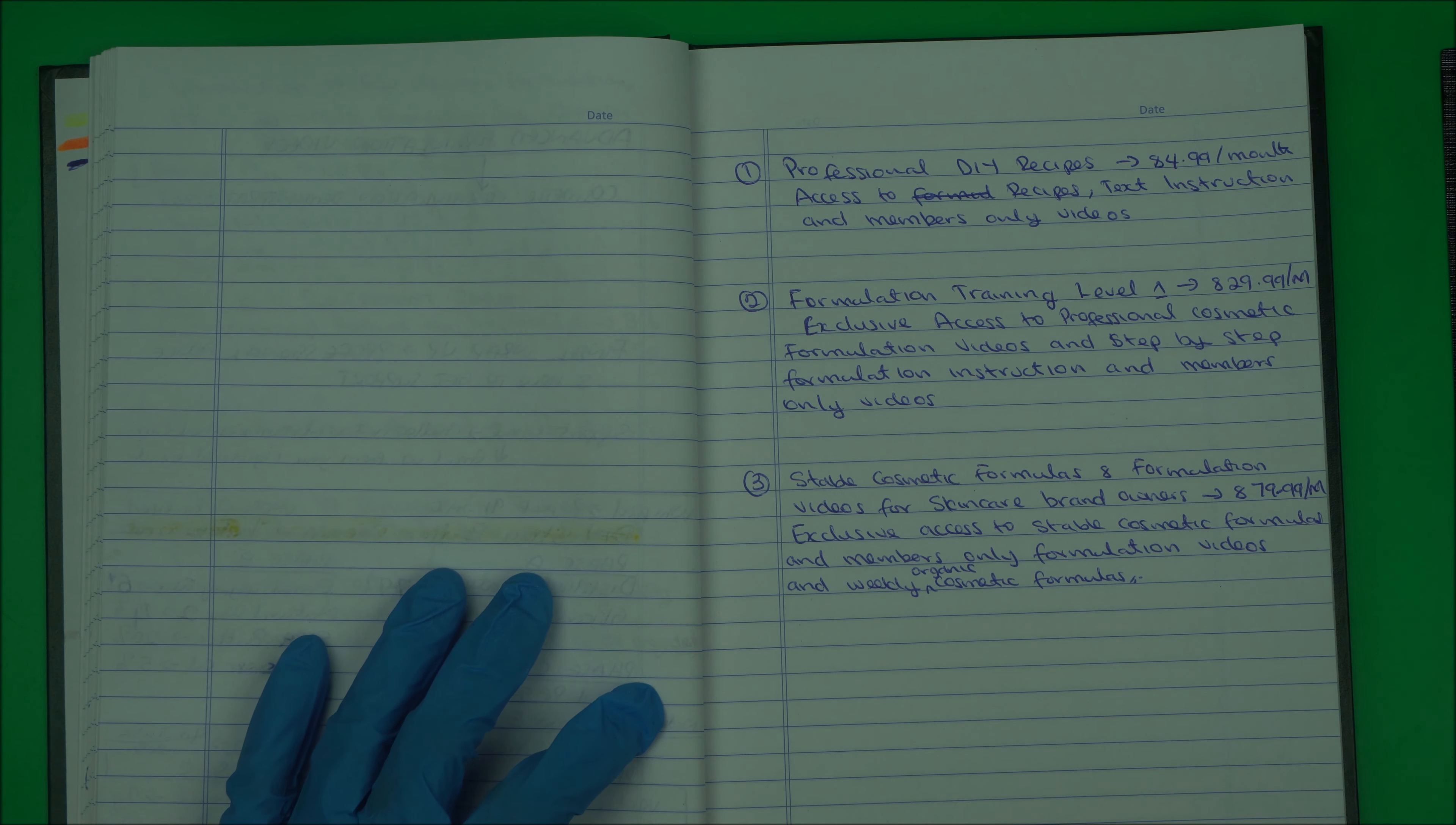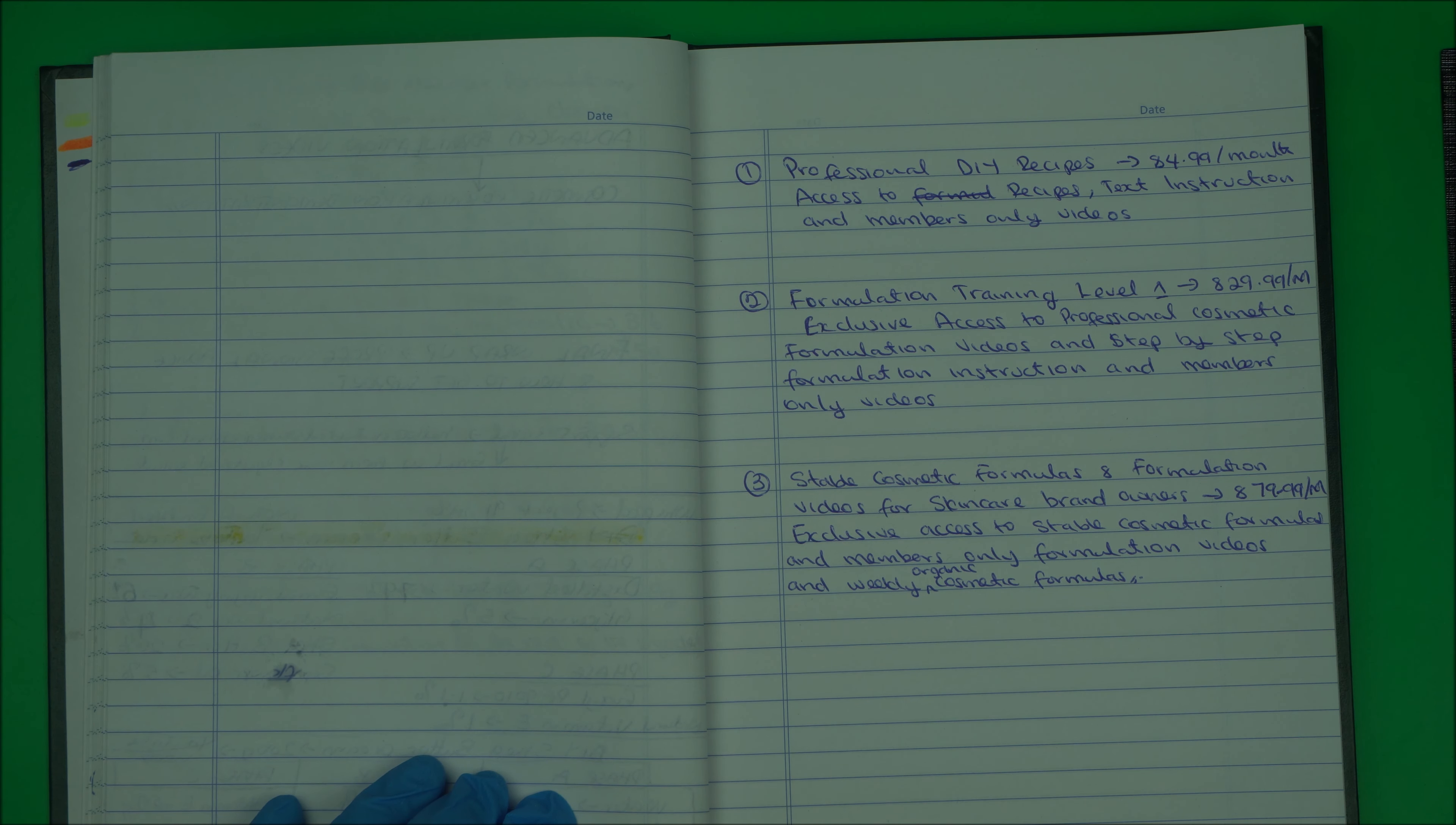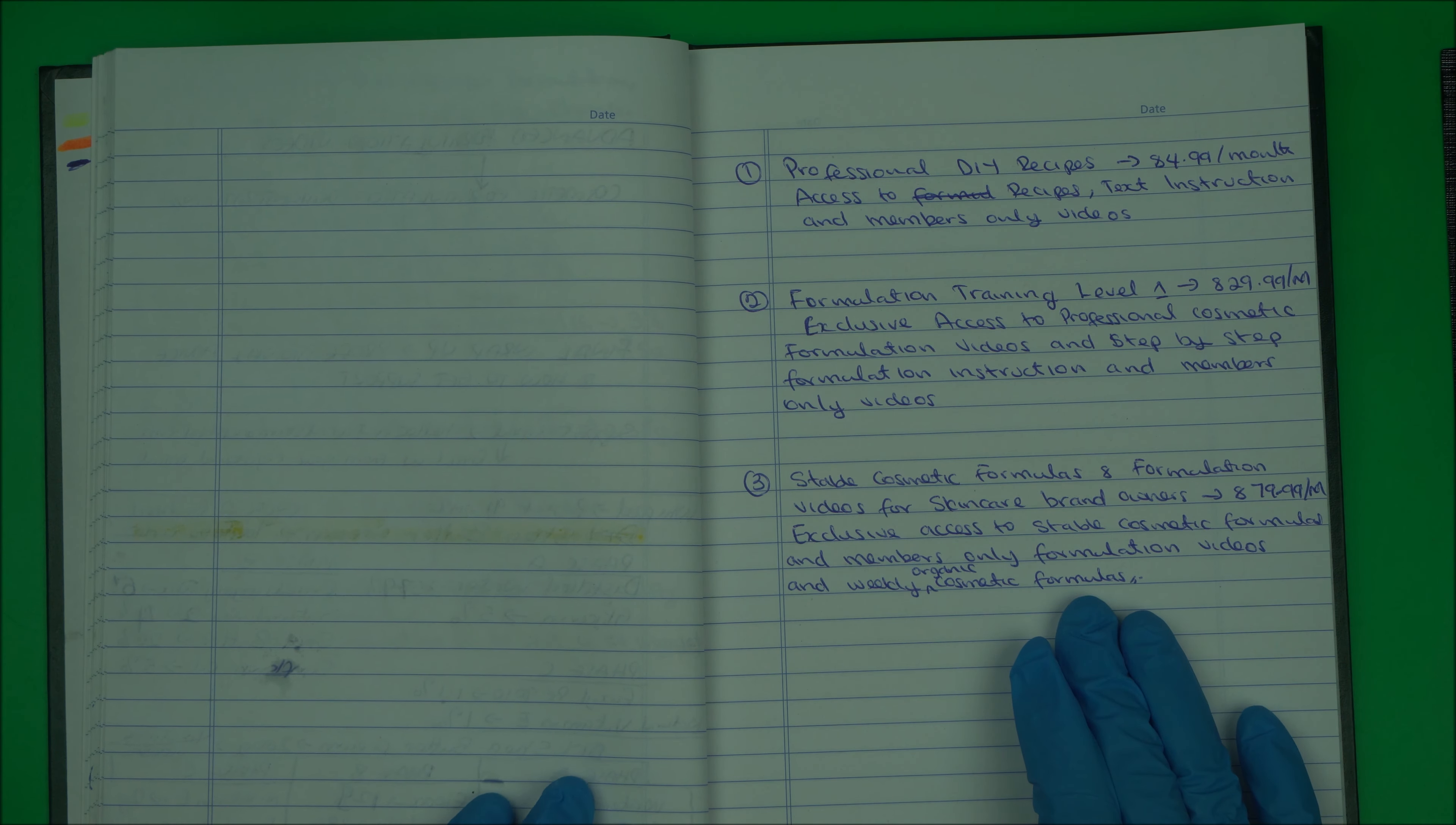My third membership option, which is made for skincare brand owners, is Stable Cosmetic Formula and Formulation Video. This costs $79.99 per month. You have access to stable cosmetic formula, so you won't have a problem doing trial and error. You will also have access to professional DIY recipes, the formulation training level one, and in addition to that, you will have access to your own.